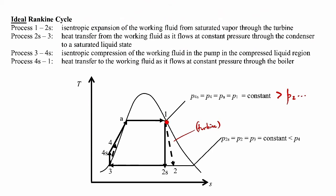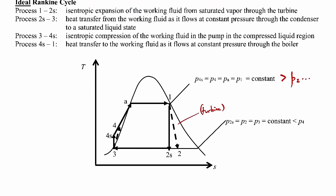State 2 or 2s is under the vapor dome — a saturated liquid-vapor mixture. From 2s or 2 to state 3 is the condenser, which is a constant pressure process, so we stay on the same isobar all the way to a saturated liquid state at state 3. State 3 leads into the pump, and we typically want the pump to operate using just a liquid, which is why we're at the saturated liquid state.